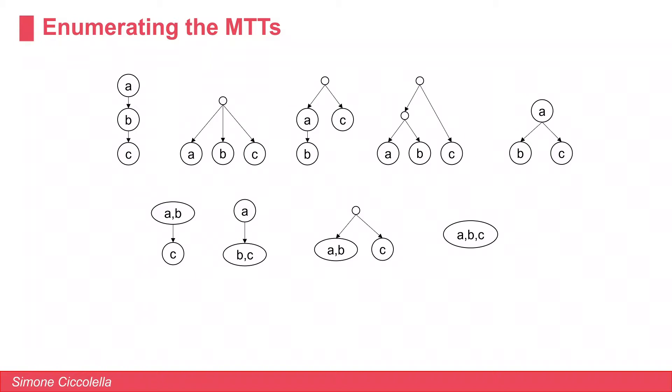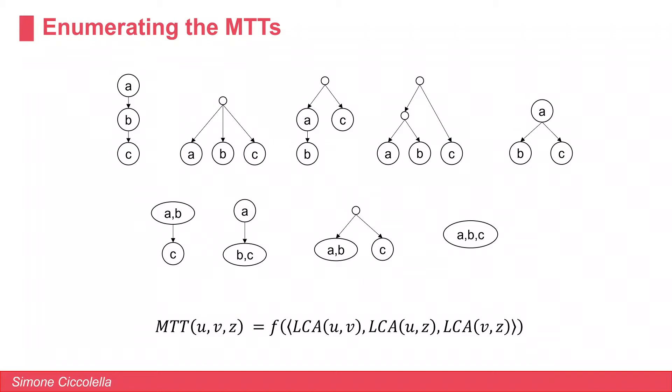Following these additional formulations, we have additional minimal tree topologies, once again with all possible permutations of the labels. The importance of the enumeration is that since we know all possible minimal tree topologies, we are able to fully characterize them as a function of the LCA of the pairs of the given triplet of labels.